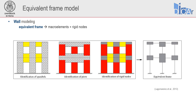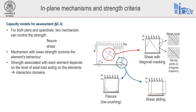Spandrels allow coupling of the lateral response of pier elements, also influencing their boundary conditions, restraining their end rotation and thus affecting the lateral capacity of masonry panels. Spandrels and piers are defined as structural elements, and then strength criteria are assigned to associate an in-plane mechanism, maximum displacement, and element strength. The strength criteria account for the geometry, the boundary conditions, the material properties, and the level of compression on elements. This topic was discussed in the third webinar of this series. Using the strength criteria, we are able to describe the macroscopic behavior of spandrel and pier elements.